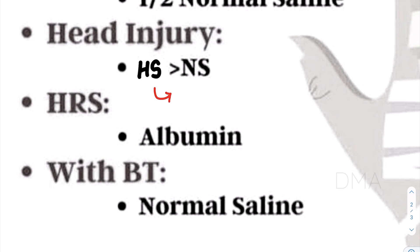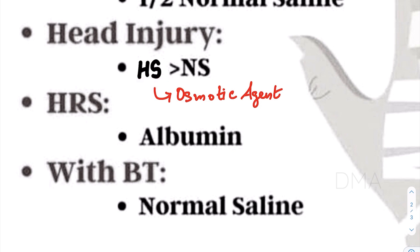The hypertonic solution acts as an osmotic agent and extracts fluid from the swollen cerebral tissue, thereby reducing intracranial pressure. So it is always advised to give hypertonic 3% NaCl solution to head injury patients rather than normal saline.